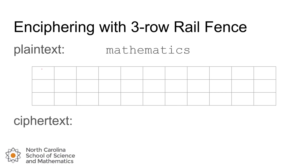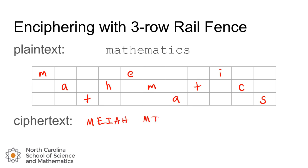So we'll zigzag our letters starting in the top left, and then we'll collect the letters in the top row — M, T, E, I — followed by letters in the middle row — A, H, M, T, C. You can see we get a different cipher text message even though we have the same plain text, because we altered the number of rails used.